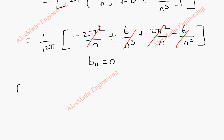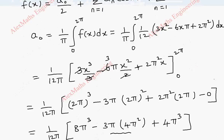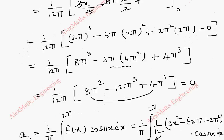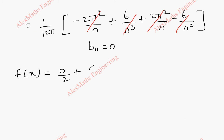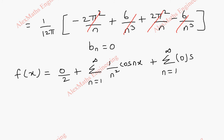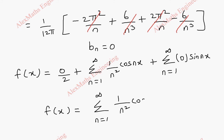Substituting into our formula: f of x equals a0 by 2 plus sigma n equal to 1 to infinity of an cos nx plus sigma n equal to 1 to infinity of bn sin nx. Since a0 is 0, bn is 0, and an is 1 by n squared, f of x reduces to sigma n equal to 1 to infinity of 1 by n squared times cos nx. So we have completed the first part.